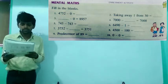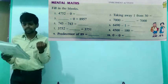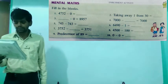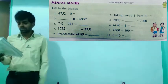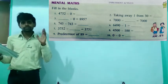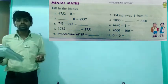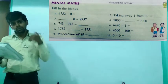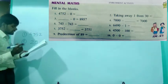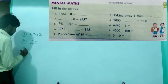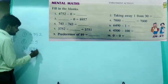Let's see the third one: something minus 0 equals 8957 — we have to find the missing number. We know that if 0 is subtracted from a number, the difference is the number itself. So the third answer is 8957.